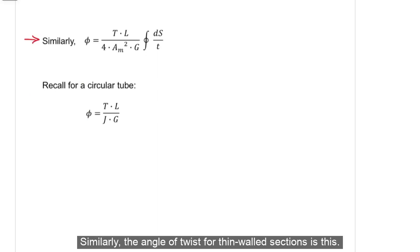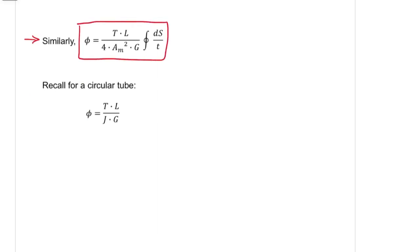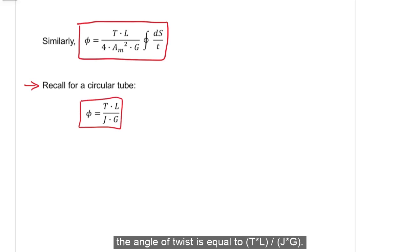Similarly, the angle of twist for thin walled sections is this. Recall, for a circular tube, the angle of twist is equal to T times L over J times G.